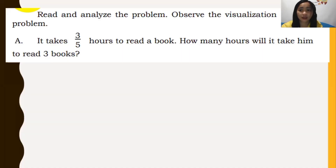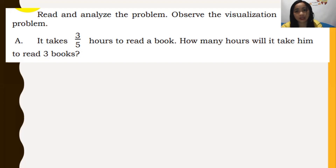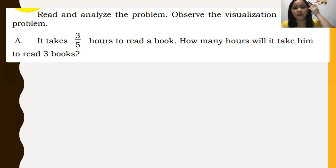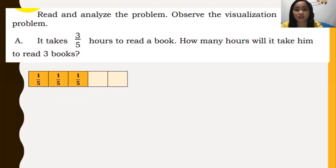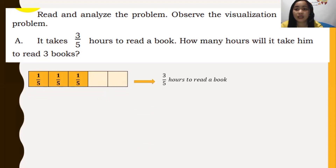We have here an example in your module — Example A. It takes three-fifths of an hour to read a book. How many hours will it take to read three books? So for one book, it is three-fifths hours. That is the representation — how to visualize three-fifths hours to read one book.